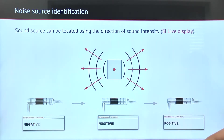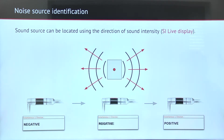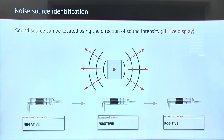When doing noise source identification, we often move the probe in space and observe the magnitude and direction of sound intensity. The directivity of the sound intensity probe is therefore something to keep in mind. The image on screen shows a basic principle of noise source identification.